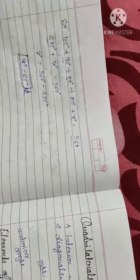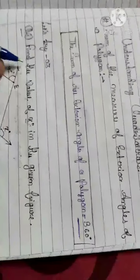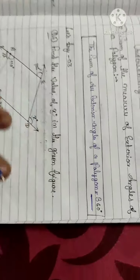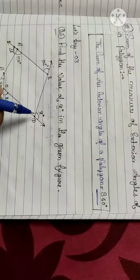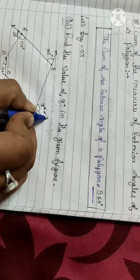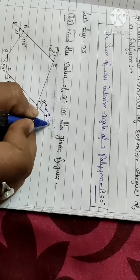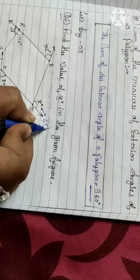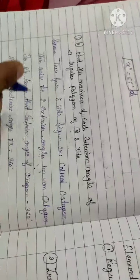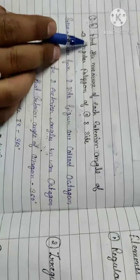The value of x is 65 degrees. Now let's move to the next question: find the value of x degrees in the next figure.